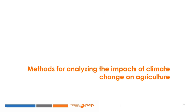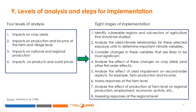Now let us turn our attention to methods for analyzing the impacts of climate change on agriculture. The literature distinguishes four levels of analysis: studies analyzing the impacts on crop yields; those looking at the impacts on production and income at farm and village level; those analyzing the effects on national and regional production; and those studying the impacts on products and world prices. The implementation of these studies is done in eight steps.